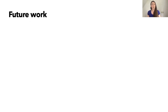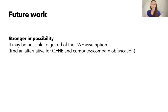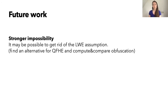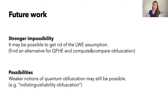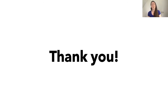I'll end with an outlook on possible future work. First, it may be possible to get rid of the LWE assumption. To do this, you would need to find an alternative for the quantum fully homomorphic encryption by moving some classical part of it back into the circuit so you don't rely on LWE, and you would need to get rid of the compute-and-compare obfuscation by finding a different solution for the fact that the obfuscated state may be destroyed after homomorphic evaluation. On the possibility side, weaker notions of quantum obfuscation may still be possible. For example, indistinguishability obfuscation is not ruled out by our impossibility result and is getting a lot of attention in the classical crypto world — it may still be possible to quantumly obfuscate classical or quantum functionalities in this weaker sense. Thank you for your attention.